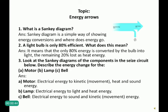Question 2: A light bulb is only 80% efficient. What does this mean? It means that only 80% of the energy is converted by the bulb into light. The remaining 20% is lost in the form of heat energy.